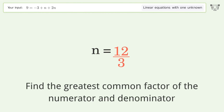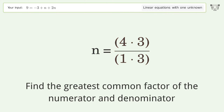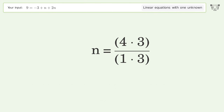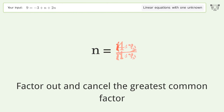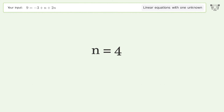Find the greatest common factor of the numerator and denominator. Factor out and cancel the greatest common factor. And so the final result is n equals four.